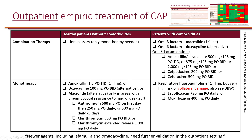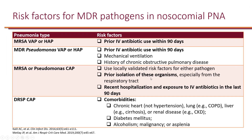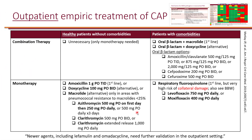Those comorbidities include chronic heart, lung, liver, or renal disease, as well as diabetes, alcoholism, malignancy, or asplenia. For healthy patients without those comorbidities, combination therapy is unnecessary, so we can give them monotherapy with a single oral antibiotic. The drug of choice for single-agent outpatient therapy for CAP is amoxicillin 1 gram PO TID.